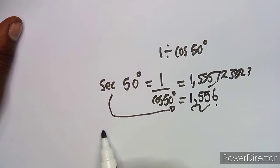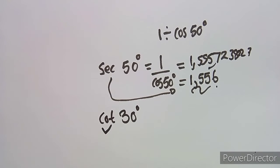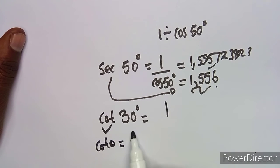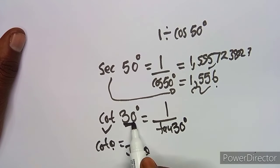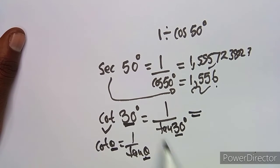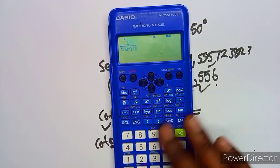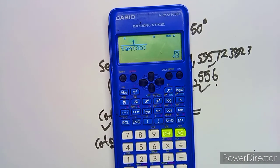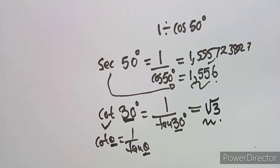Similarly, cot 30 degrees cannot be obtained directly from the calculator since there is no 'cot' button. Using the reciprocal relationship, cot theta equals one over tan theta. So cot 30 degrees equals one over tan 30 degrees. Entering this gives the square root of 3. This may also come up in questions involving special angles and special triangles.